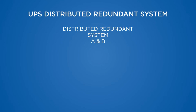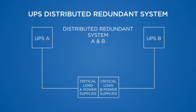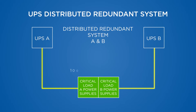Each UPS supports its own independent distribution system with no power connections between the two systems. The DRS provides power to an independent A UPS and an independent B UPS to support the load with dual distribution networks. UPS A supports computer A power supplies and UPS B supports computer B power supplies.